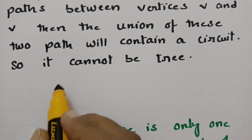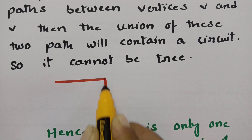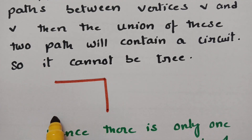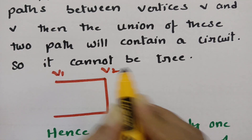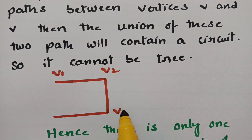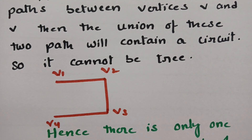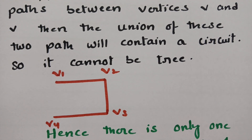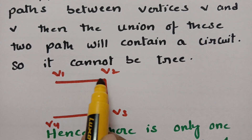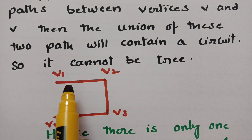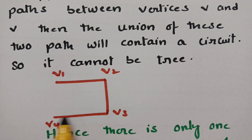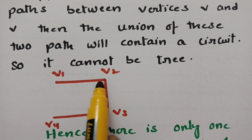Here I am showing you one graph. This is v1, this is v2, this is v3, and this is v4. If you consider these four, this is a path — there is a single path here. There is only one path between each and every vertex.